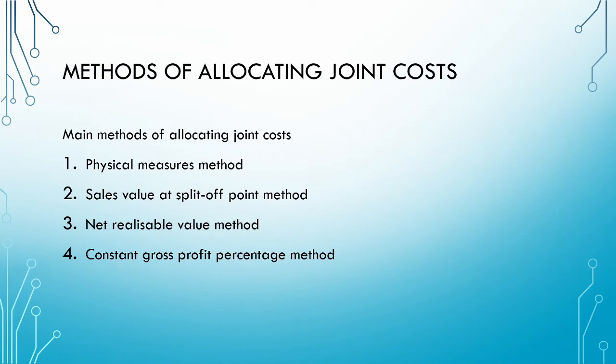Now that we have seen the different outputs from a joint process, let us consider how we can allocate these costs. Remember, the joint costs are only allocated to the joint products — there is no allocation of costs to the by-products, scrap, or waste. In this series, we are going to be looking at four methods of allocating the joint costs: the physical measures method, the sales value at split-off point method, the net realizable value method, and the constant gross profit percentage method.